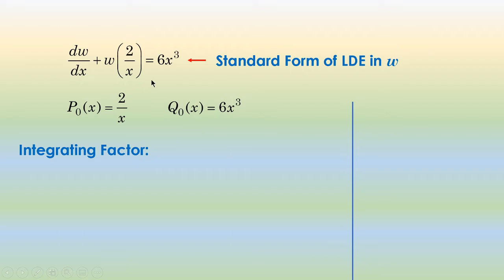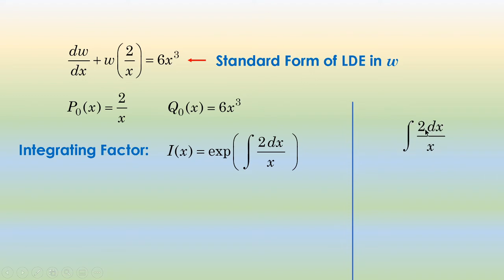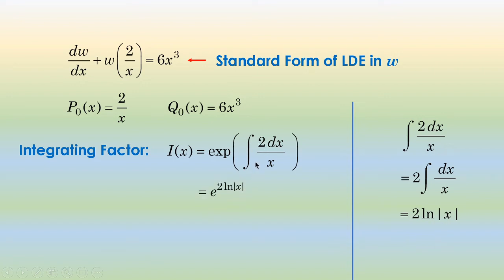The integrating factor is I(X) = exp(∫(2/X)dx). Evaluating this integral: moving 2 outside the integral gives 2·∫(dX/X), which equals 2·ln|X|. Using the logarithm property, 2·ln|X| equals ln(X²). Therefore the integrating factor is e^(ln(X²)) equals X².